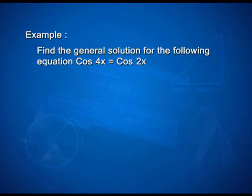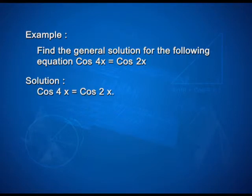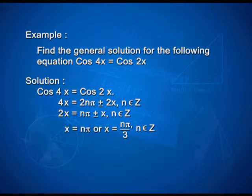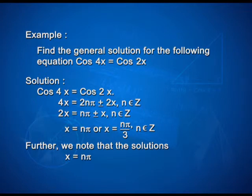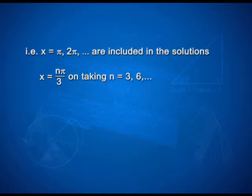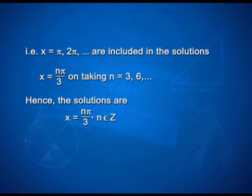Find the general solution of cos 4x = cos 2x. Since cos 4x = cos 2x, we have 4x = 2nπ ± 2x, where n ∈ ℤ. This gives 2x = nπ ± x, so x = nπ or x = nπ/3. Since the solutions x = nπ are included in x = nπ/3 for n = 3, 6, and so on, the general solution is x = nπ/3, where n ∈ ℤ.